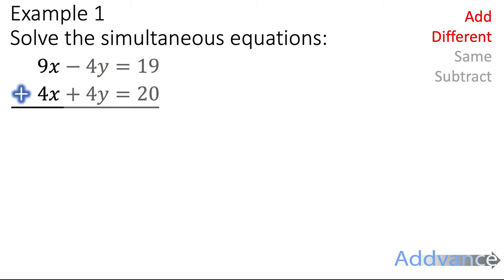Start with the x's. 9x plus 4x is 13x. Minus 4y plus 4y is zero. Remember we are adding, so it's like minus 4y plus plus 4y, which is just adding. And those two cancel out when we add. And then we've also got 19 plus 20 is 39. Okay, we've added each part of the equation. Now you've got 13x plus 0y equals 39. So 13x equals 39. We divide by 13 and we get x is equal to 3. We know what x is now.